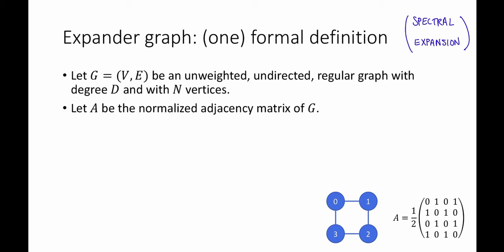Since A is a symmetric matrix, that means that it has n real eigenvalues. So observe, A has n real eigenvalues. Let's call them lambda 1, greater than or equal to lambda 2, greater than or equal to dot dot dot, greater than or equal to lambda n.